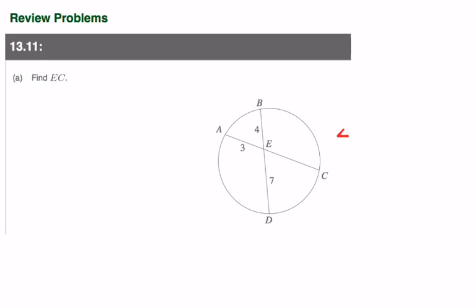Let us look at chapter 13 review problems together. The first one has two chords intersecting and they want us to find EC right over here. We can set up the relationship as 4 times 7 equals 3 times X, because the product of the segments of the chords must be equal when they're intersecting. So X must be equal to 28 over 3.